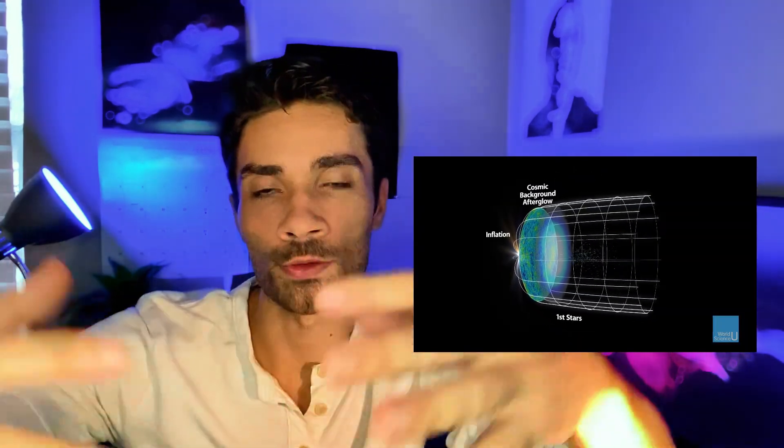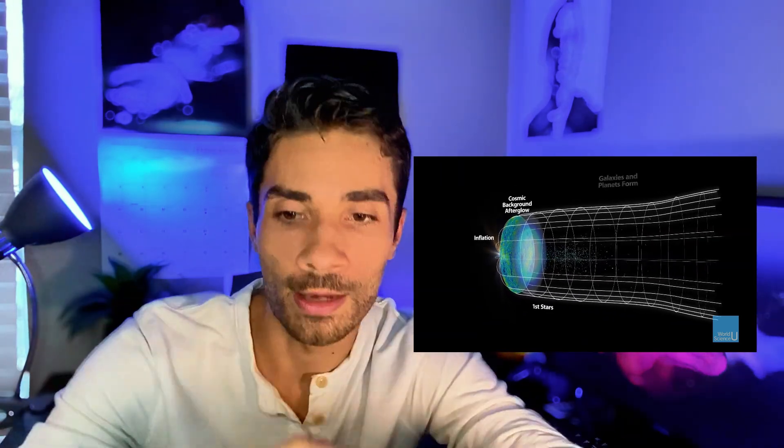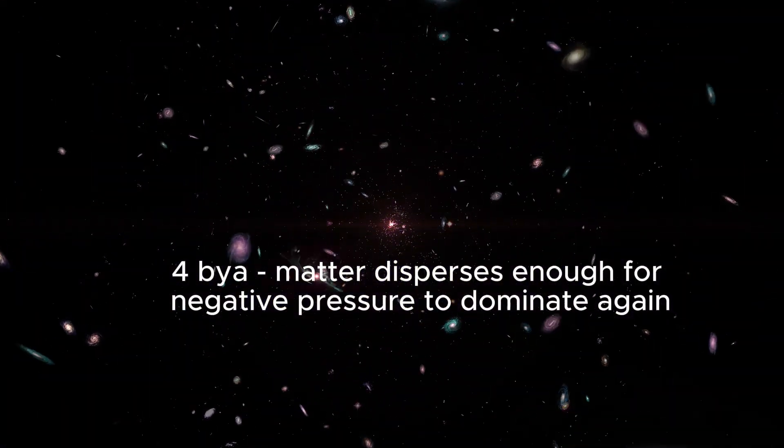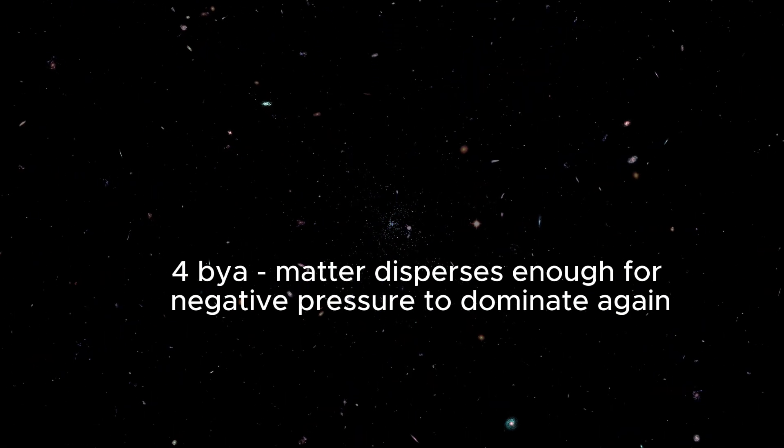As all that matter and energy put pressure on the universe to contract, it kept expanding but much more slowly. This went on for about 10 billion years, until about five billion years ago when the universe began to expand again. That negative pressure — that vacuum energy — was still present in the universe. As the universe expanded enough, that negative energy was able to take over again, inflation continued, and that's what we're seeing: an acceleration of this expansion because there is enough negative pressure now able to do its work.